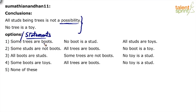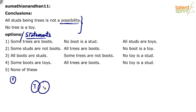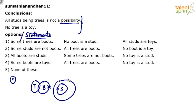Let's draw the diagram for option one. The statements are: some trees are boots, no boot is a stud, and all studs are toys. We have two things starting with T, so let's use TR for trees and TY for toys. Some trees are boots - draw trees and boots overlapping. No boot is a stud. All studs are toys.